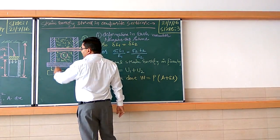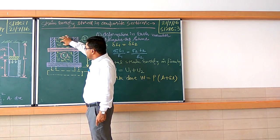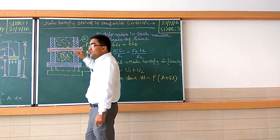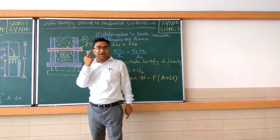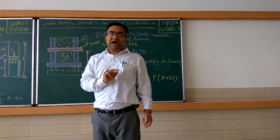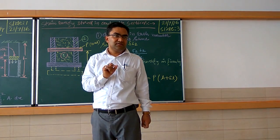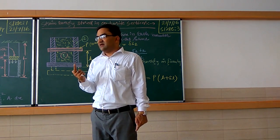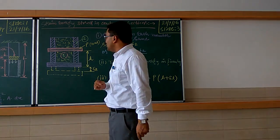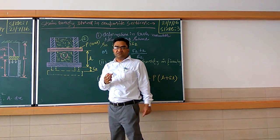We have taken a composite section — a violet color on the outside and a yellow color inside, representing material number 1 and material number 2. The first very important point to note is that their Young's moduli will be different. Up to now we observed a single Young's modulus because the material was single. Since here there are two materials, due to the change in material, the Young's modulus will also change.